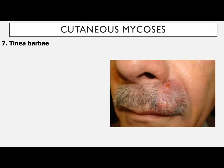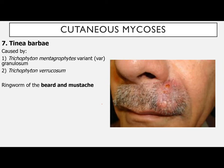Tinea barbae is caused by Trichophyton mentagrophytes var. granulosum and Trichophyton verrucosum. This is ringworm of the beard and mustache.